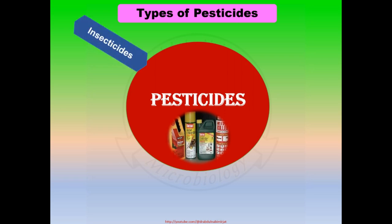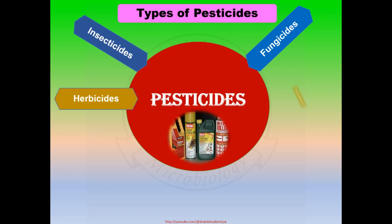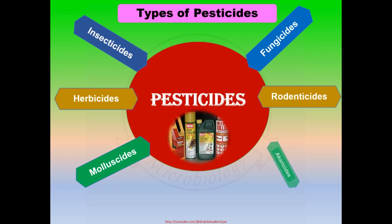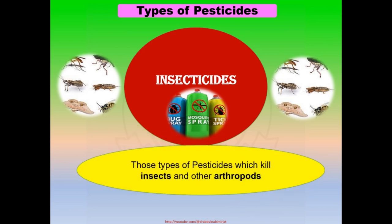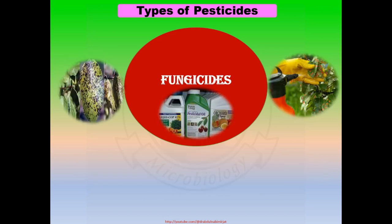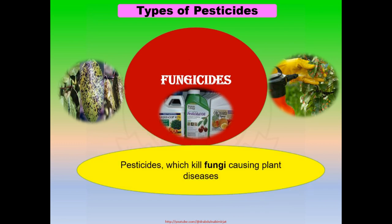There are different types of pesticides such as insecticides, fungicides, herbicides, rodenticides, molluscicides, and acaricides. Insecticides are those types of pesticides which kill particularly insects and other arthropods.